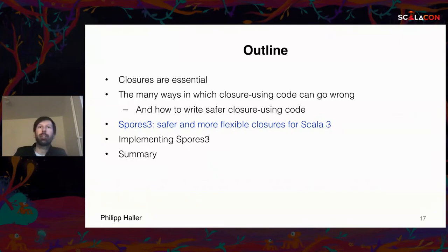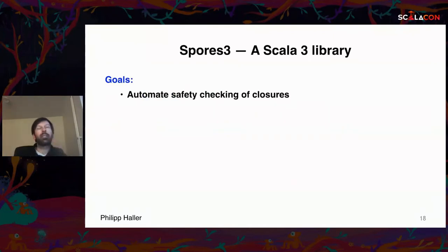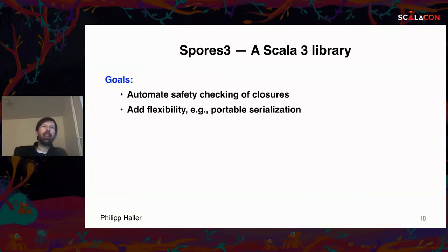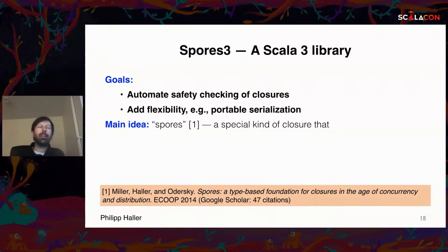This is why I want to introduce a new library for Scala 3 called Spores 3. This library tries to automate some of these safety checks and also add some flexibility. The first goal is to automate safety checking to avoid issues with concurrent and distributed code, and to expand what we can do with closures in a fearless way — including a portable serialization scheme.